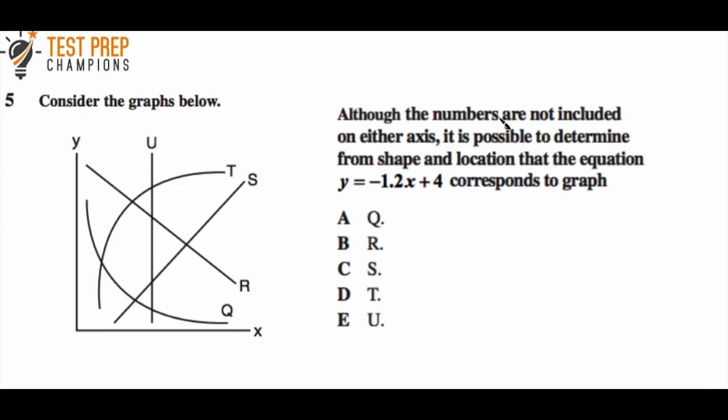Question 5: Although the numbers are not included on either axis, it is possible to determine from the shape and location that the equation Y = -1.2X + 4 corresponds to which graph. Use the graph in the question, try to figure this out, and we'll go over it.